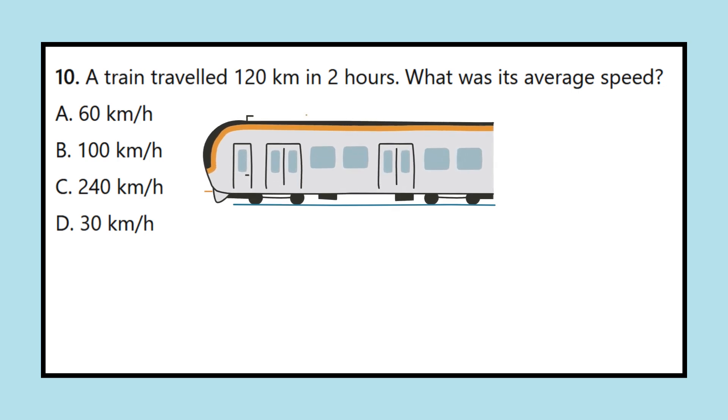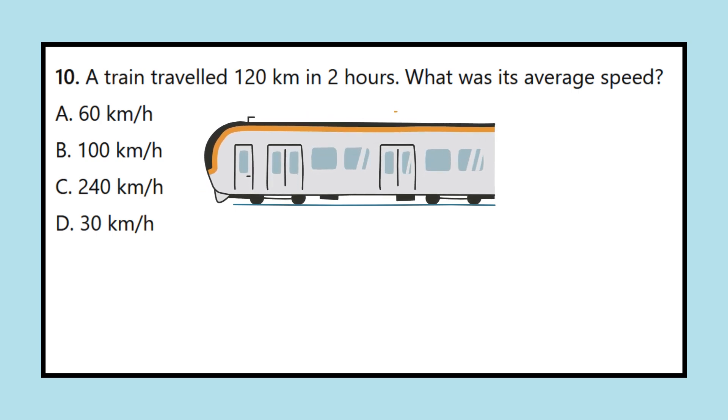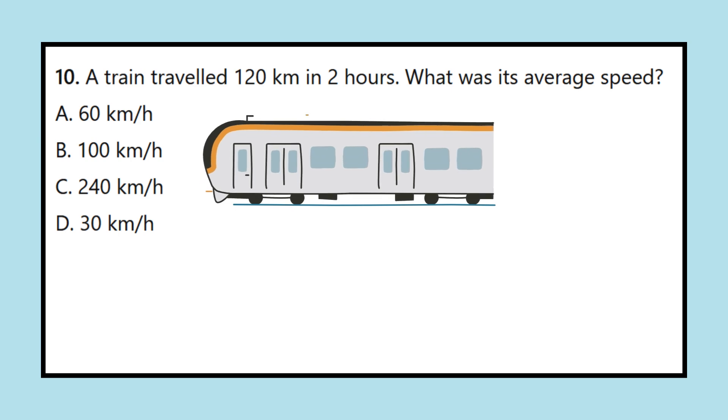Question 10: A train traveled 120 kilometers in 2 hours. What was its average speed? A. 60 kilometers per hour, B. 100 kilometers per hour, C. 240 kilometers per hour, D. 30 kilometers per hour.